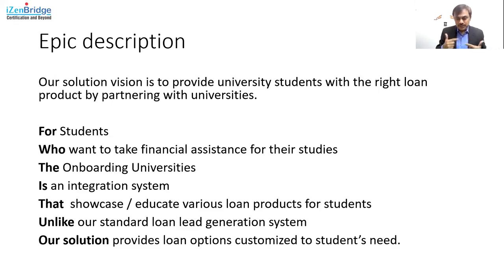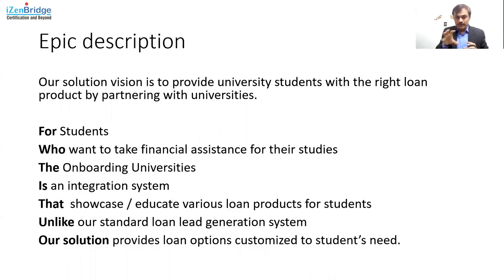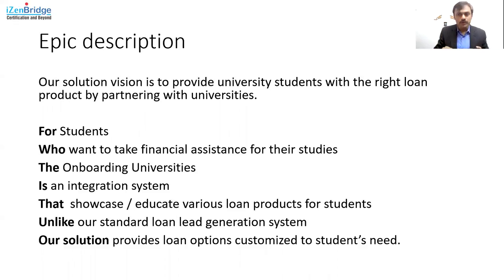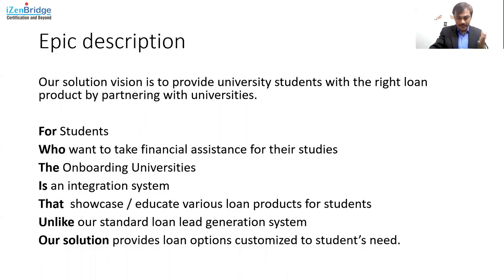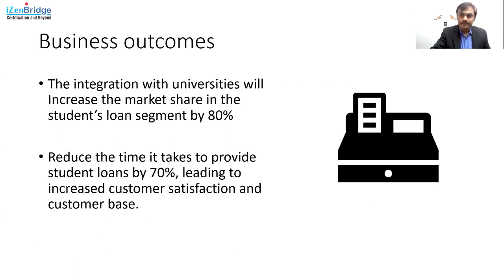I'm stressing this because in many of my product management classes, we see confusion between overall vision and an EPIC. We don't necessarily achieve the full solution vision using a single EPIC alone — we might need multiple EPICs in order to achieve the overall vision. That's why this particular EPIC is taking only the first slice of it.